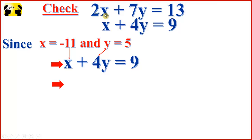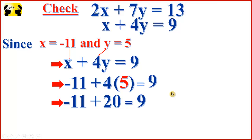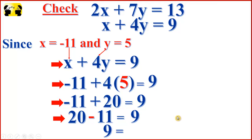Now we have to check whether the values of x and y are correct. Since x is equal to negative 11 and y is equal to 5, substituting into x plus 4y equal to 9: negative 11 plus 4 times 5 equals negative 11 plus 20, which is 20 minus 11, which is 9. Equal to 9. Verified.